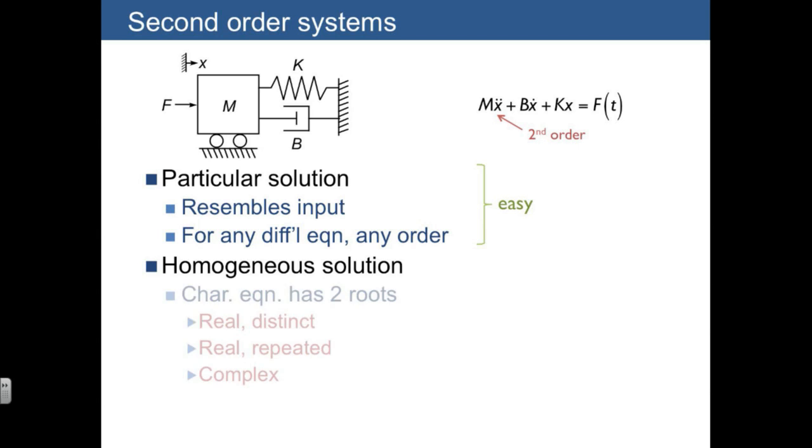The homogeneous solution, however, yields a second order characteristic equation that has two roots, which can be found using the quadratic formula. And the cases of interest are real distinct roots, real repeated roots, and complex roots, which we will next examine in order. And to get an understanding of how this affects the response is going to require a little bit of thought.